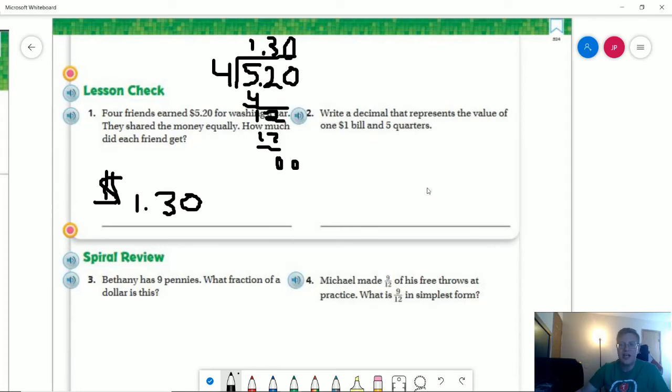And number two, write a decimal that represents a value of one $1 bill and five quarters. So five quarters is worth $1.25 plus our $1. I'm sorry, that's a horrible looking plus sign. Actually, the eraser is going to blow away the whole thing. So that would give us $2.25.